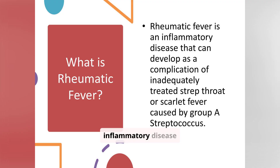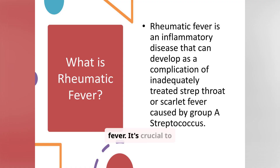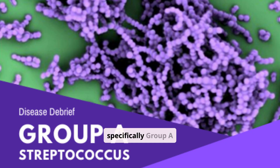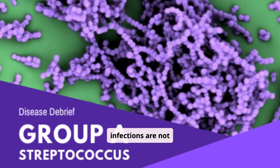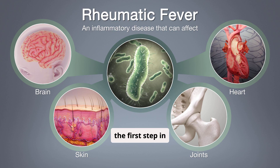Rheumatic fever is an inflammatory disease that can develop as a complication of inadequately treated strep throat or scarlet fever. It's crucial to understand that this condition arises from the body's response to a bacterial infection, specifically group A streptococcus. When these infections are not properly addressed, they can trigger a cascade of events leading to rheumatic fever. Recognizing this connection is the first step in preventing this potentially serious illness.